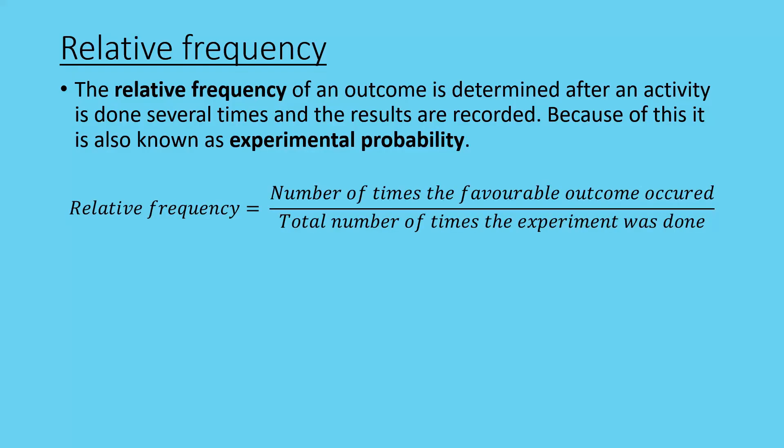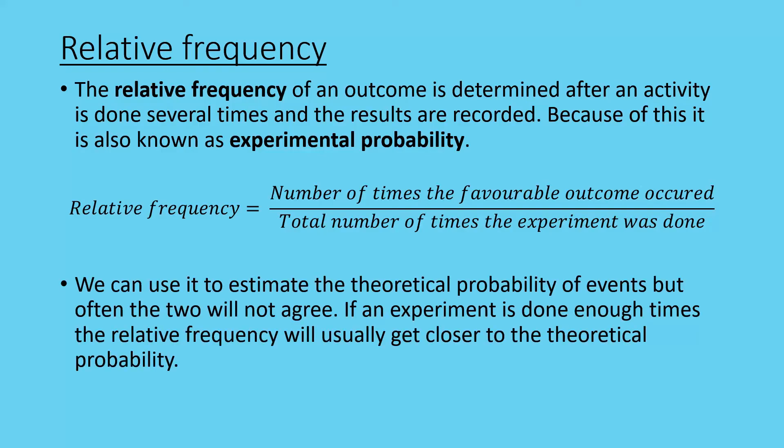The way that we show or calculate relative frequency is that the number of times the favorable outcome has occurred over the total number of times the experiment was done. We can use it to estimate theoretical probability of events, but often the two will not agree.